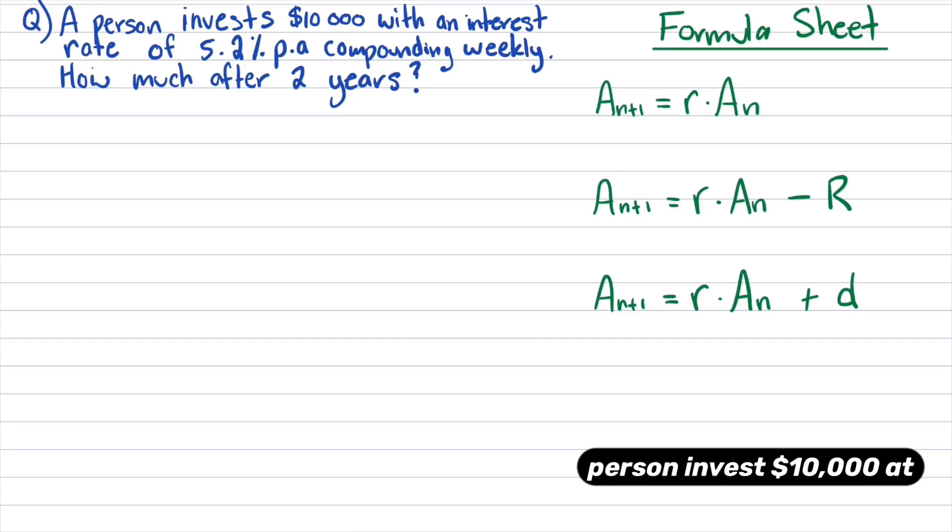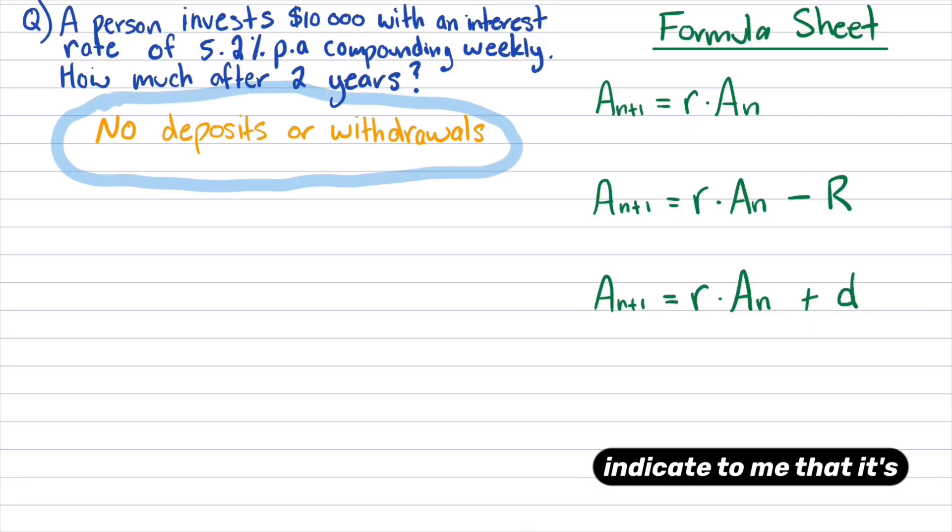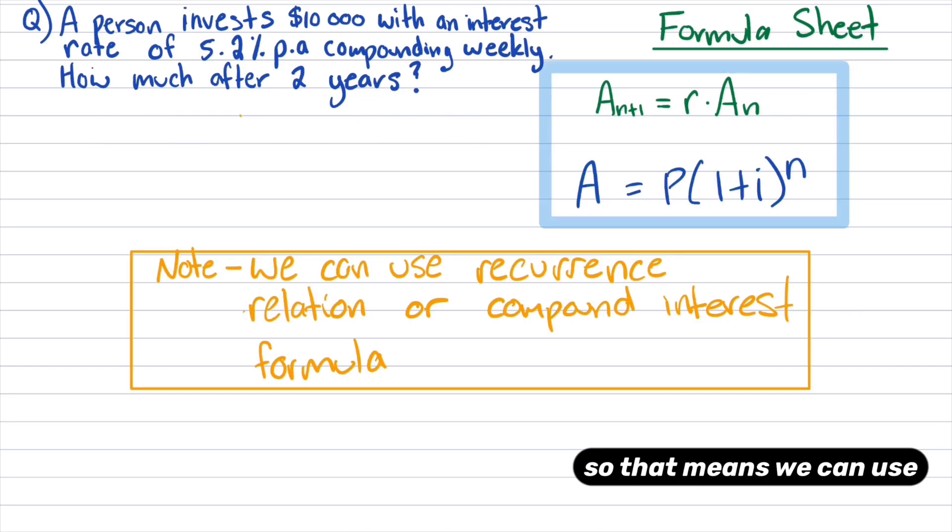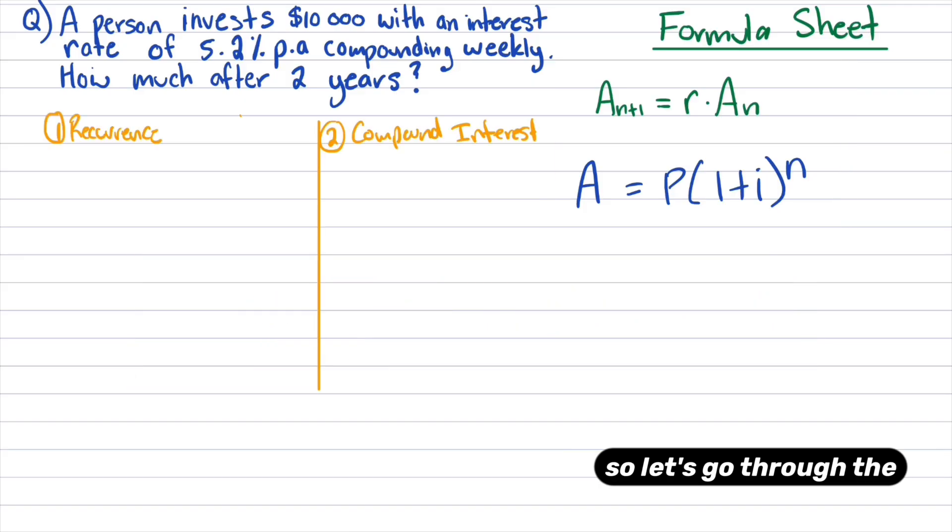So for this question here, we've got a person who invests $10,000 at an interest rate of 5.2% compounding quarterly. How much after two years? The first thing that I recognize with this question is that there's no deposits or withdrawals. That would indicate to me that it's a compound interest question. So that means we can use either the recurrence relation or we can use the compound interest formula.